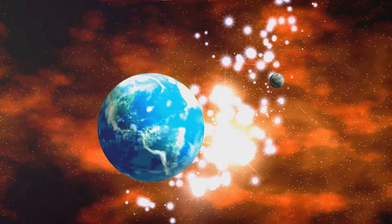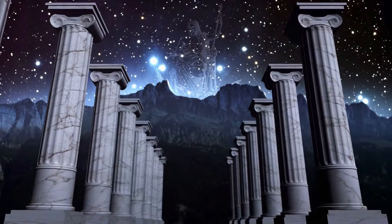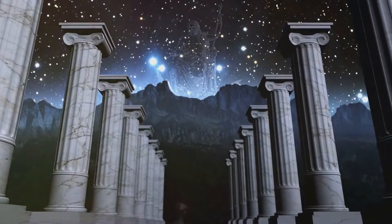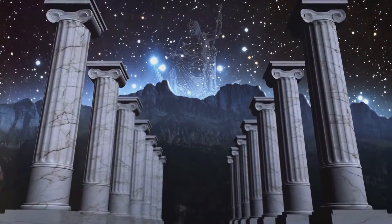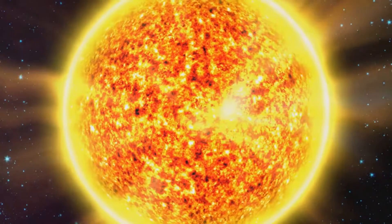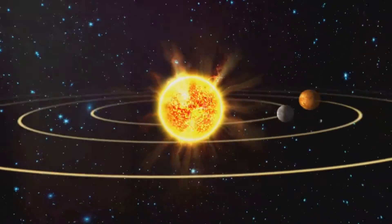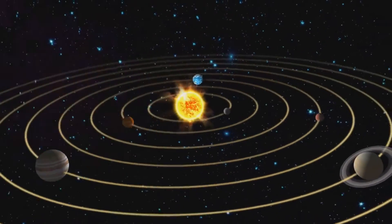In the beginning, there was only speculation. Ancient civilizations looked to the heavens for answers. The Greeks, for example, believed in a geocentric model where Earth was the center of the universe. This theory persisted until the 16th century when Nicholas Copernicus proposed a revolutionary idea, the heliocentric model.